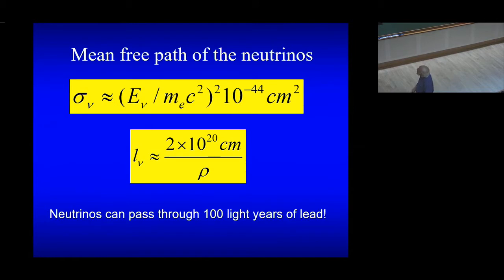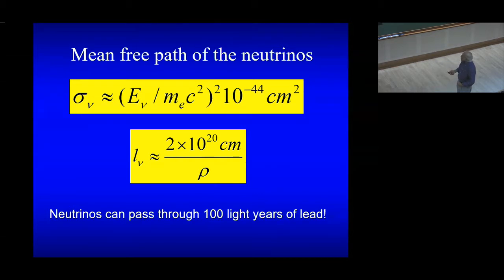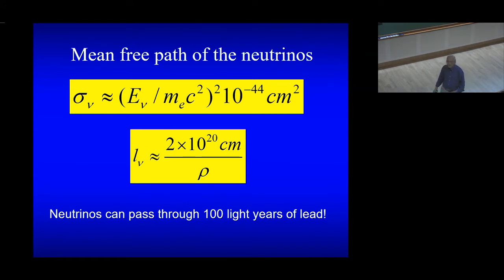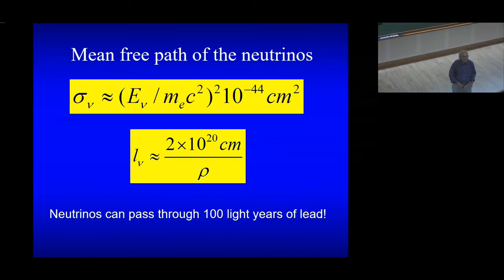It was figured out quite early on that neutrinos — that's the reason why it took almost 30 years to find them — interact very weakly with matter. Rudolf Peierls and Hans Bethe worked out that the cross-section for neutrino scattering is of the order of 10 to the power minus 44 square centimeters — incredibly small. The mean free path of a neutrino of some typical energy is of the order of 2 times 10 to the power 20 centimeters divided by the density of the matter. If you had lead, the mean free path would be 100 light years. The distance to the nearest star is about 4 light years. So the neutrino hardly interacts with matter.